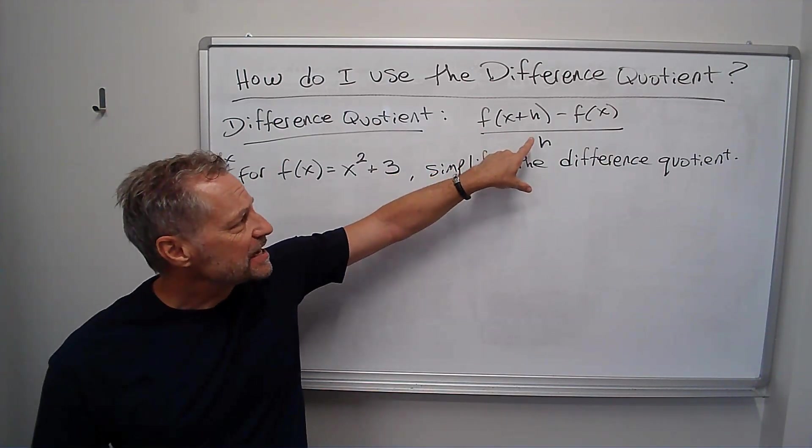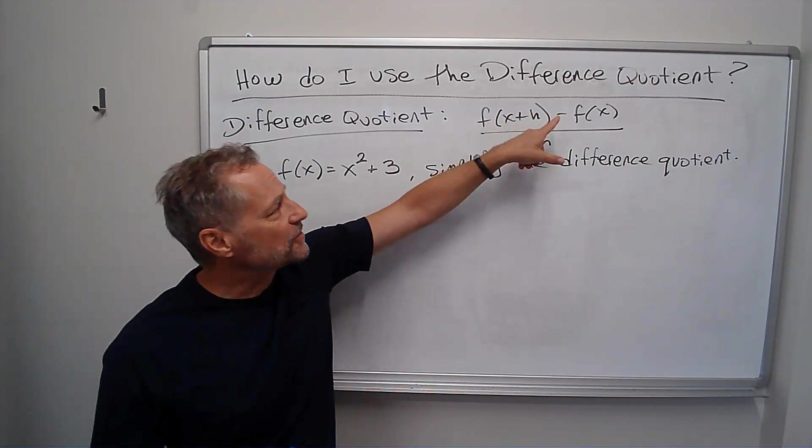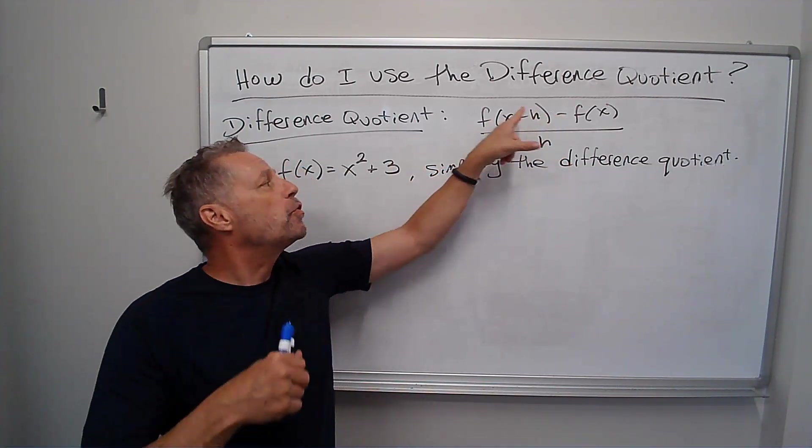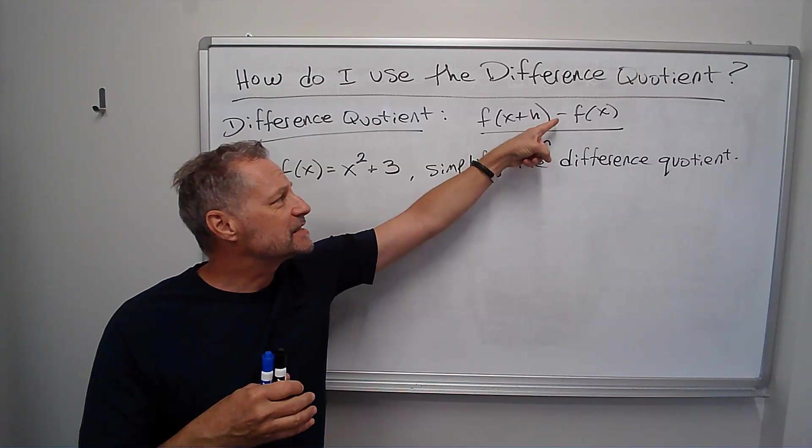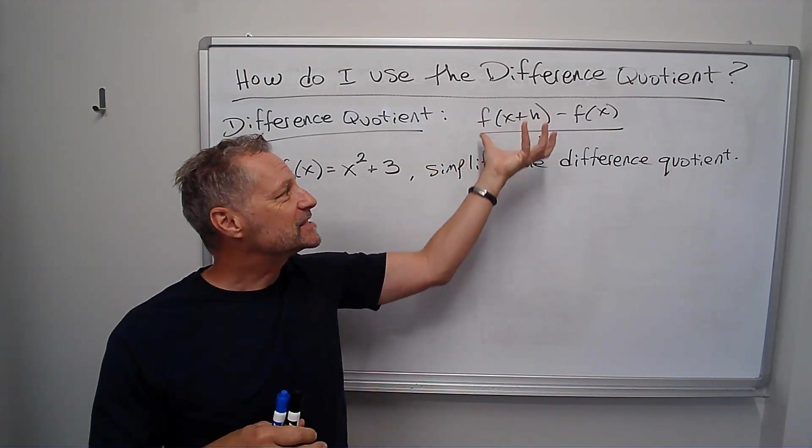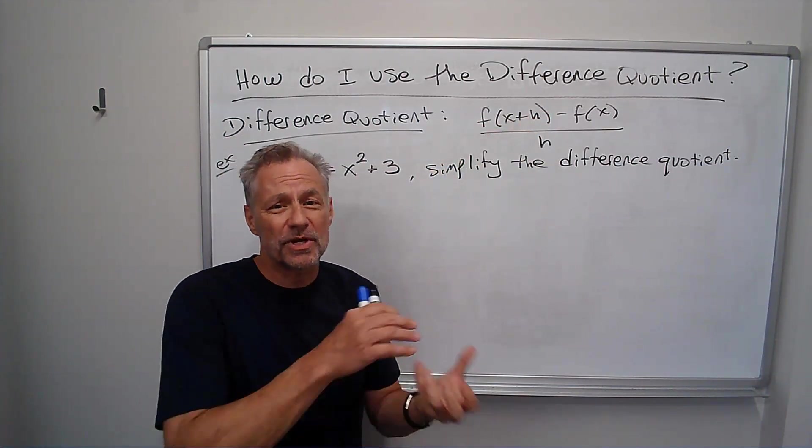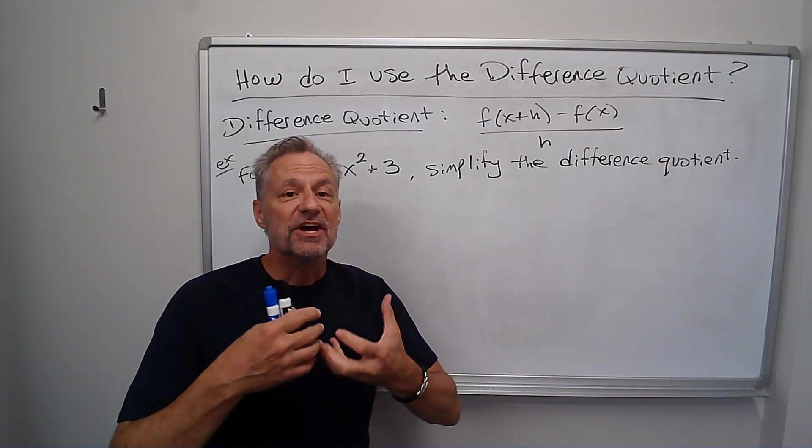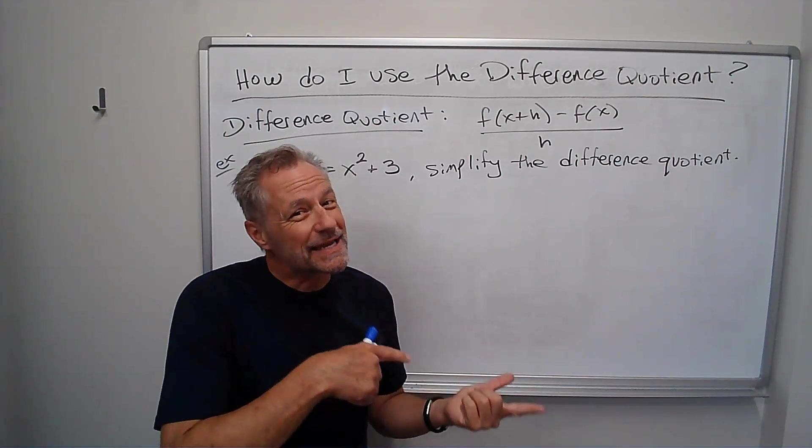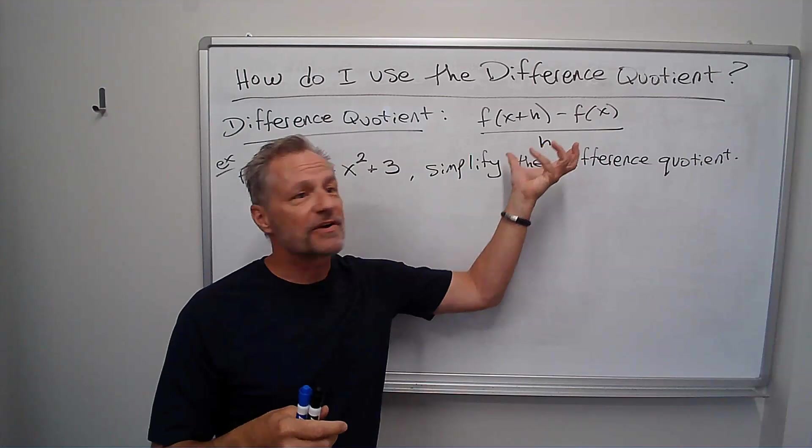f of x plus h minus f of x over h. And it's called the difference because I have this subtractive difference, quotient because I'm dividing. So it's a difference quotient. This is going to be used in calculus. We're going to use it to define what we call the derivative. We'll get there later, but for now, let's just figure out how to work it out.